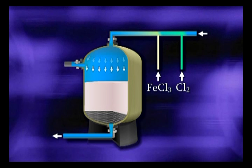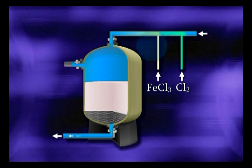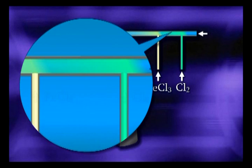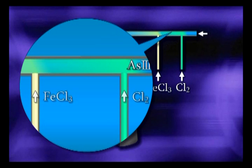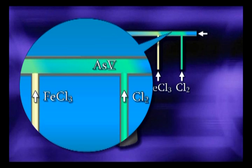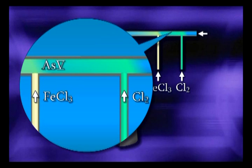Typically, if a source has arsenic 3, oxidation — usually chlorine — is used to convert arsenic 3 to arsenic 5. A coagulant, in this case ferric chloride, is added to be oxidized, producing iron hydroxide particles.